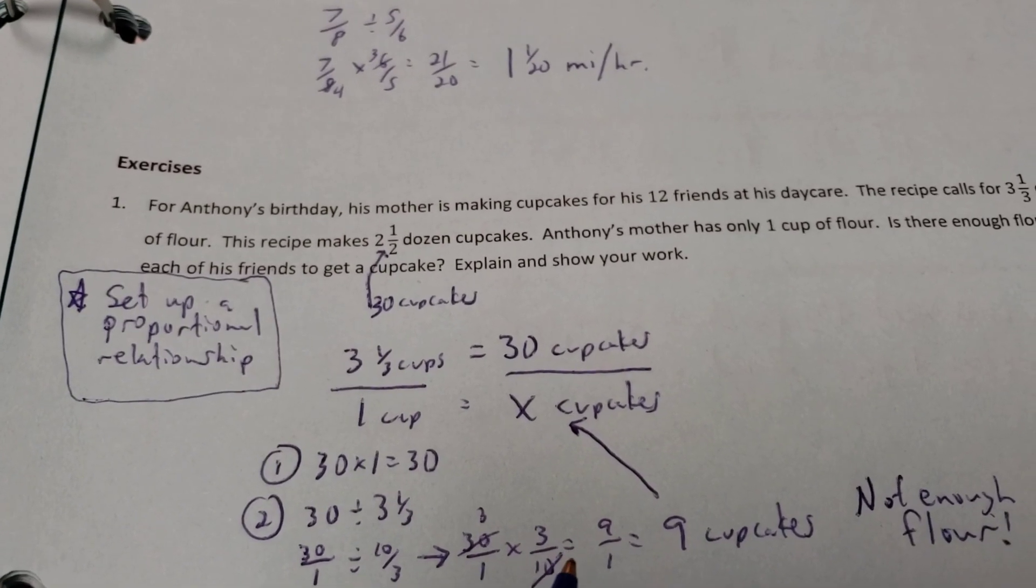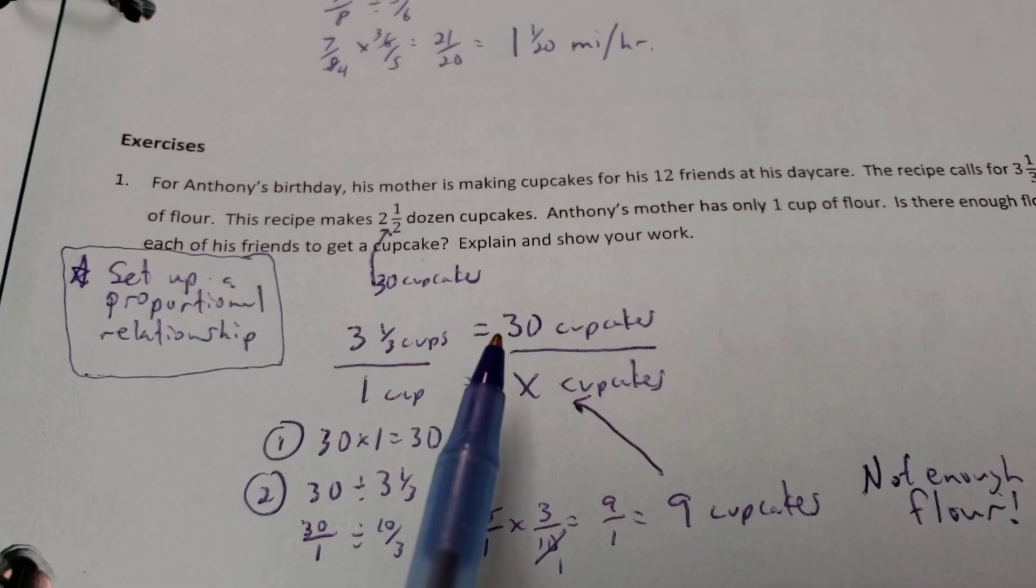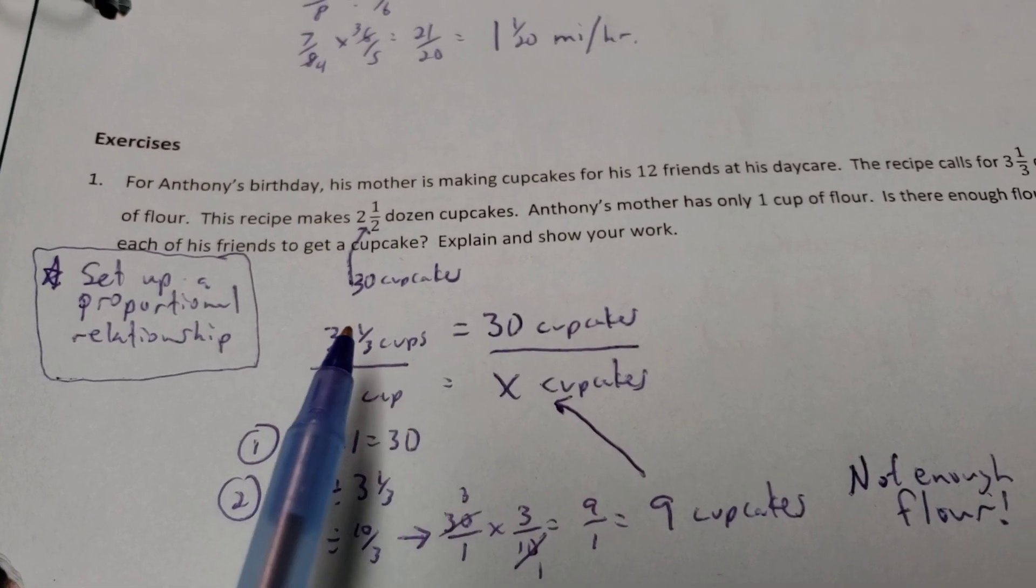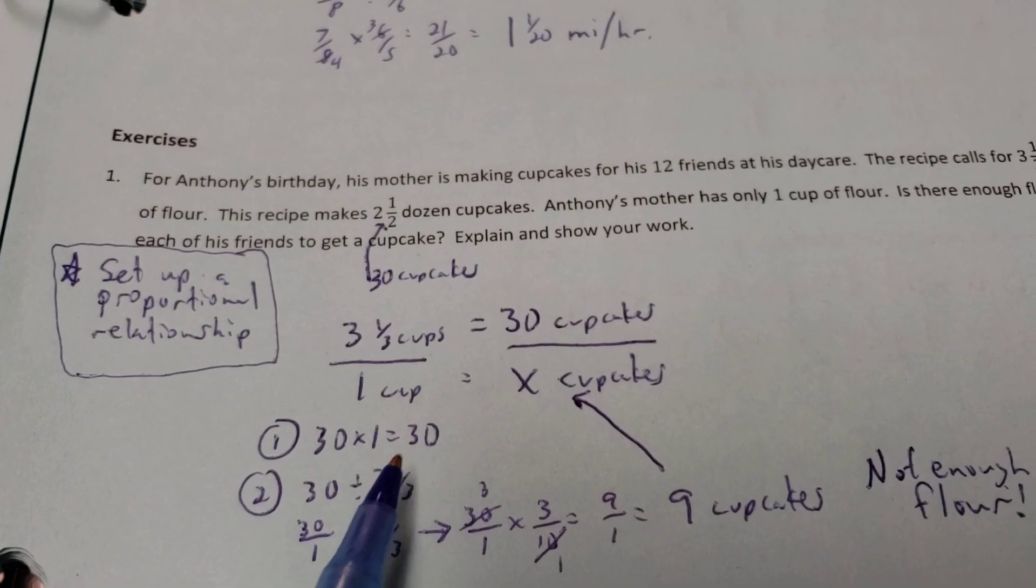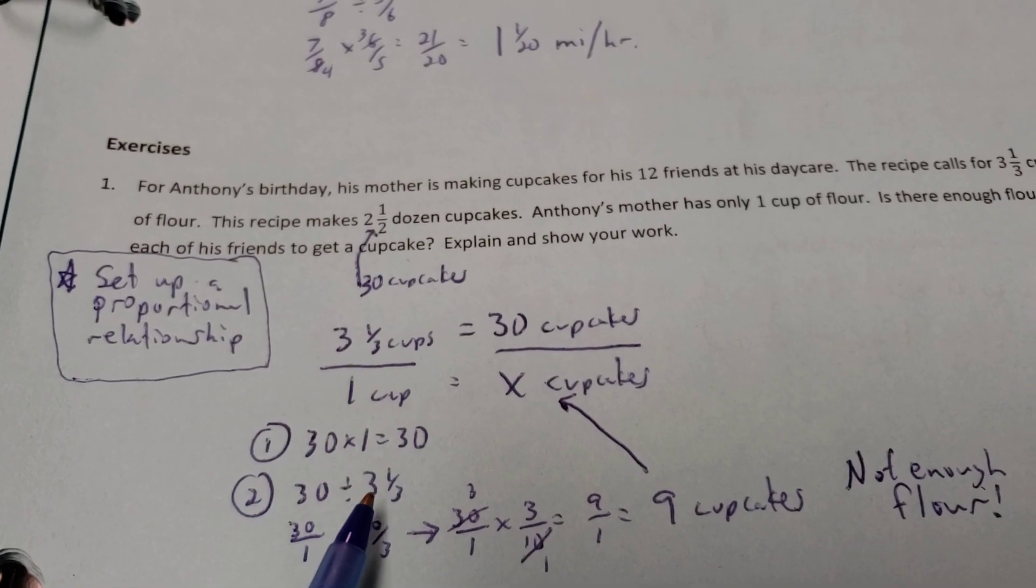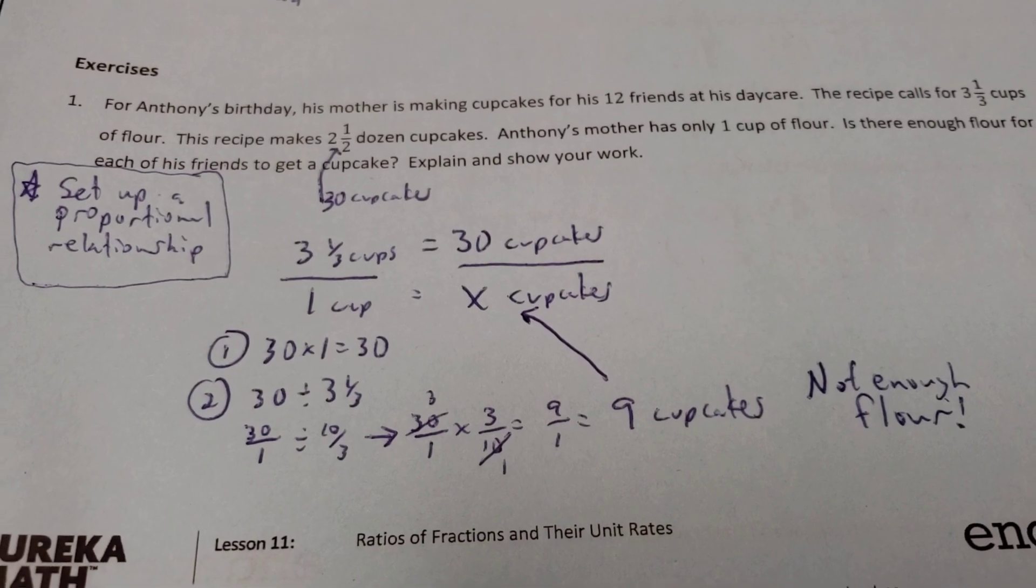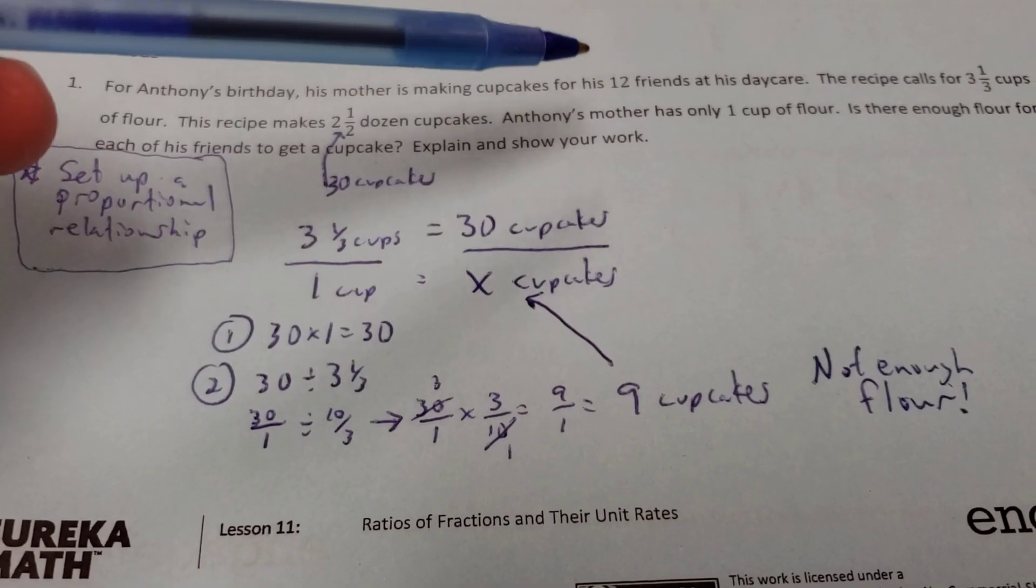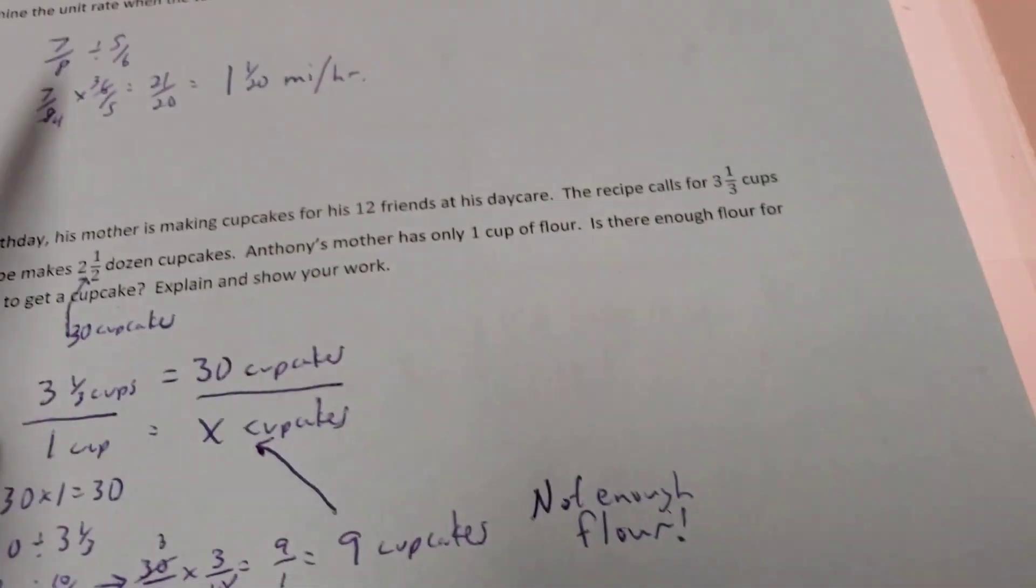So, I set up a proportional relationship problem. There's 2 steps when you set these up. We cross-multiply the 2 numbers that I can. I can multiply 30 and 1. I can't multiply this because I don't know what x is just yet. So, I cross-multiply 30 and 1, and I get 30. And then I take my answer, 30, and divide it by the leftover number. I haven't used 3 and a 1/3 yet. 30 divided by 3 and a 1/3. I do the math, and I'm getting 9 cupcakes, and that's not enough flour. Because, remember, 12 friends were at daycare. I was only making 9 cupcakes. That's not going to be enough.